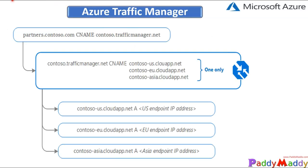Let's take an example to explain how Azure Traffic Manager works. Let's say you developed an application which works at contestor.trafficmanager.net, and this specific URL is hosted in three different regions to serve from Azure. You want to improve availability and maximize global performance, so you use Traffic Manager.